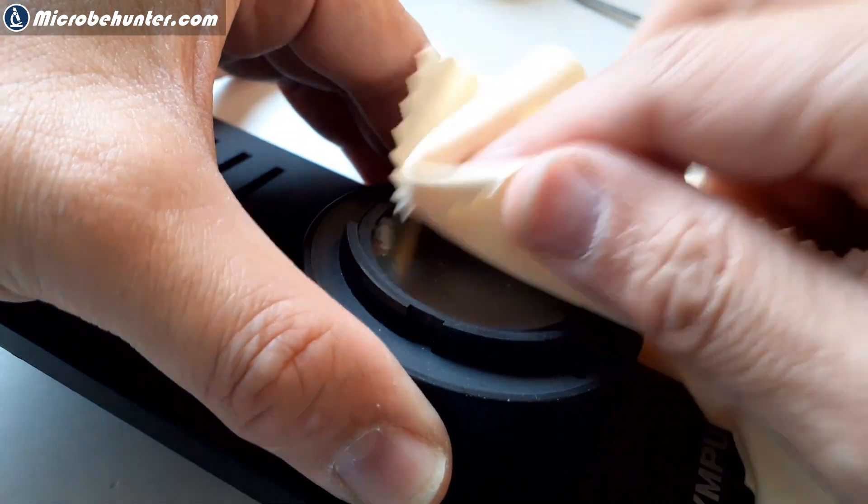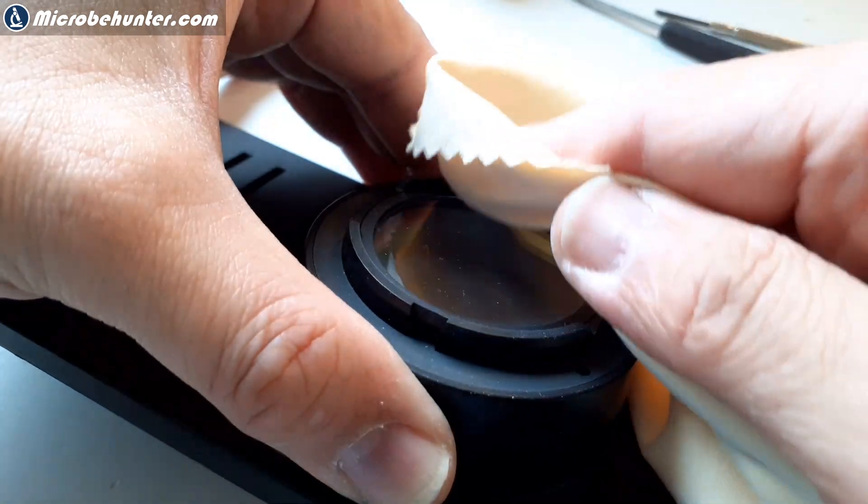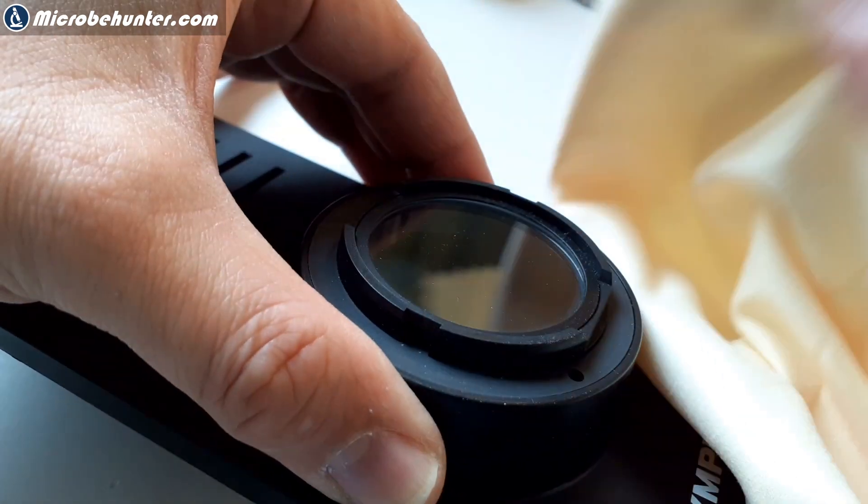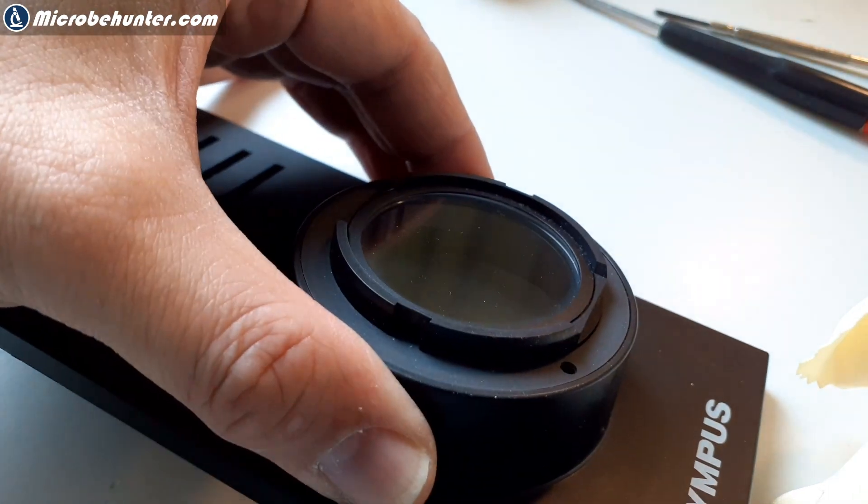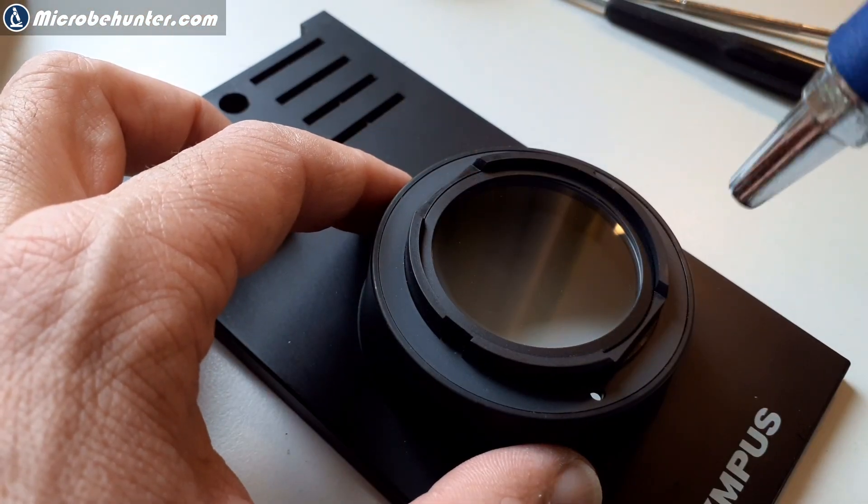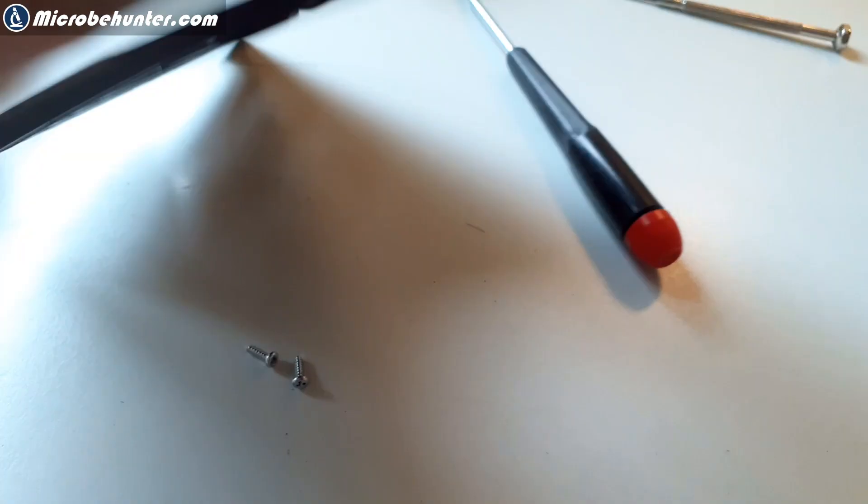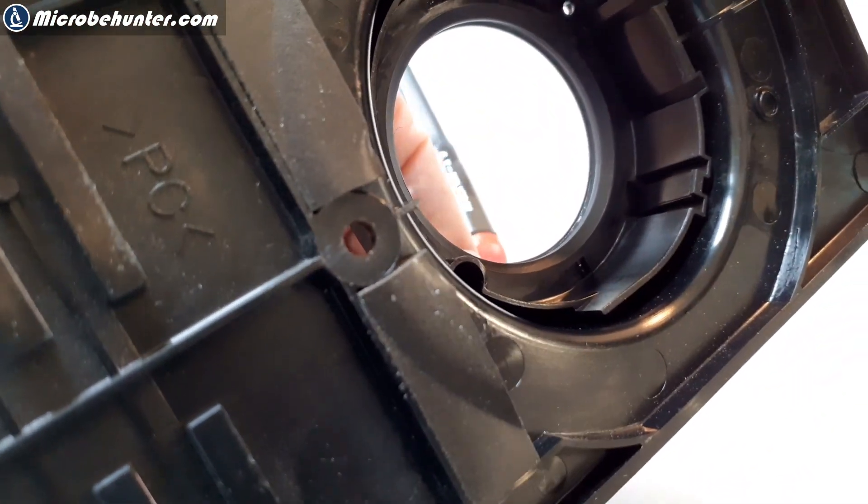So I gave it another clean. Afterwards, I again assembled everything again. I was happy that this actually solved the problem. So even if your microscope is constructed differently, I think it's a good idea every now and then to take apart everything and to give it a nice little clean.